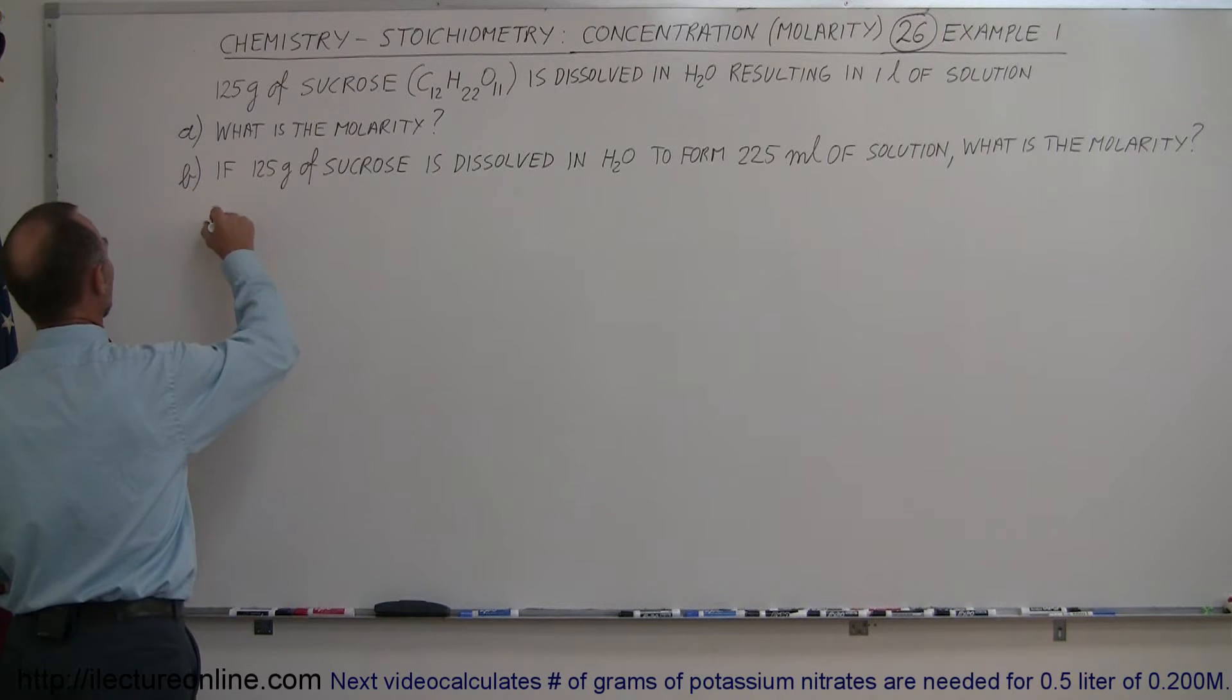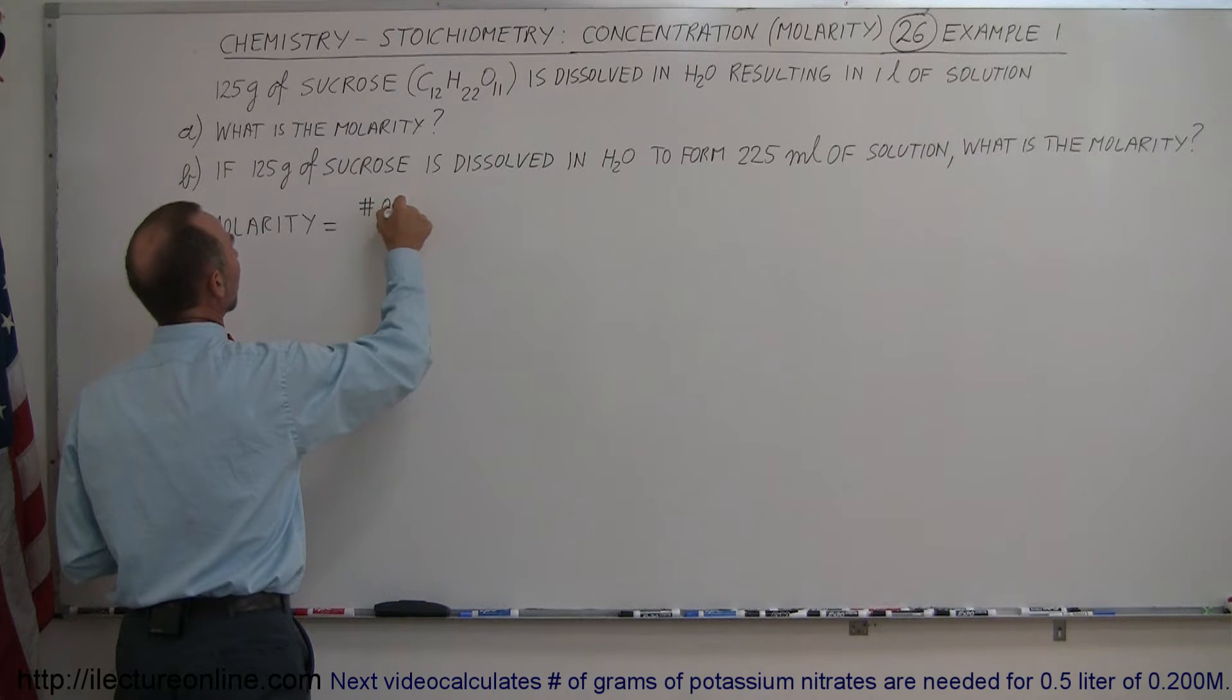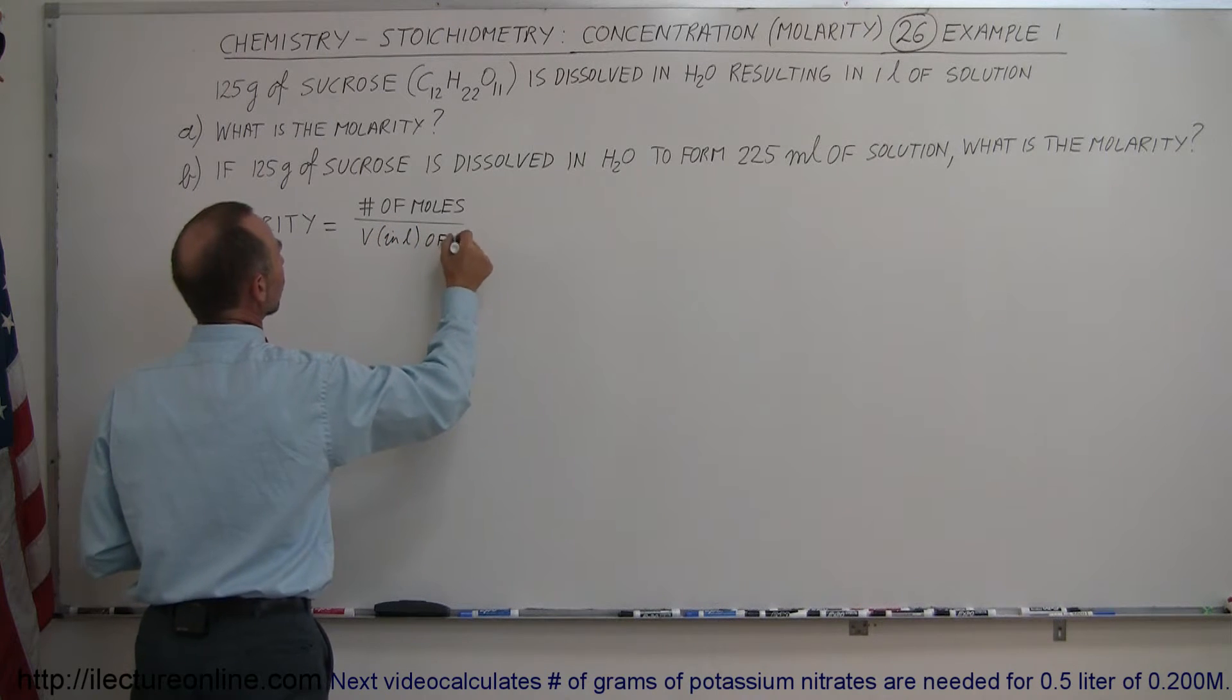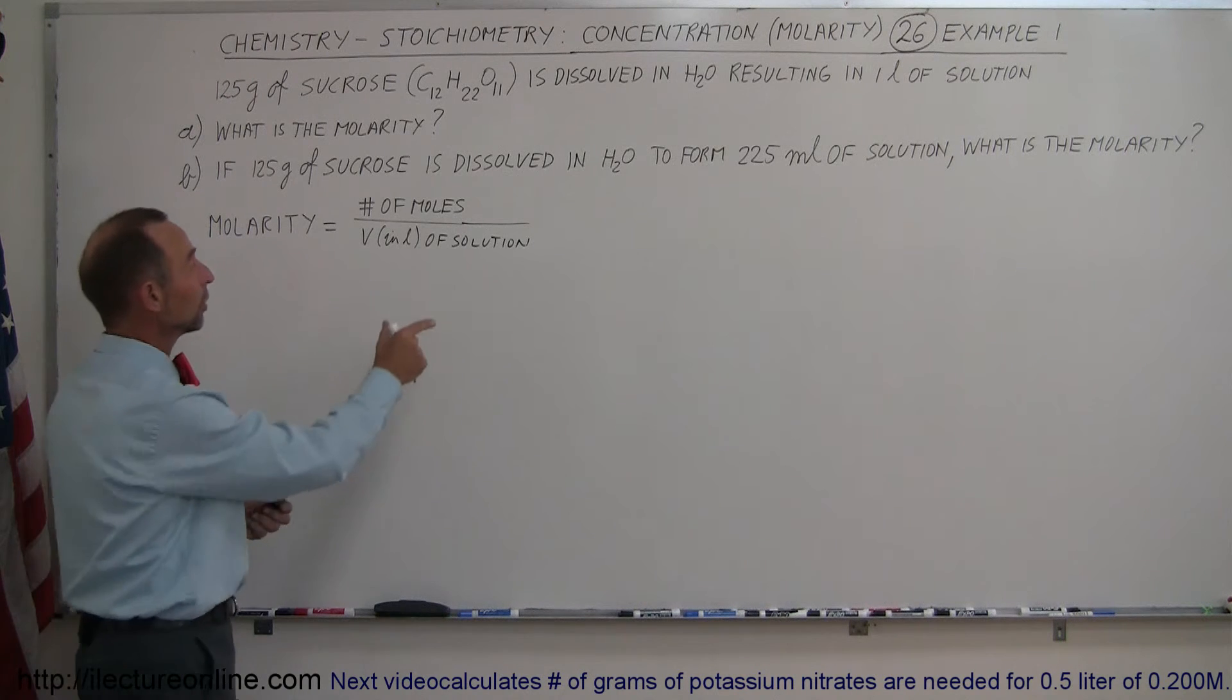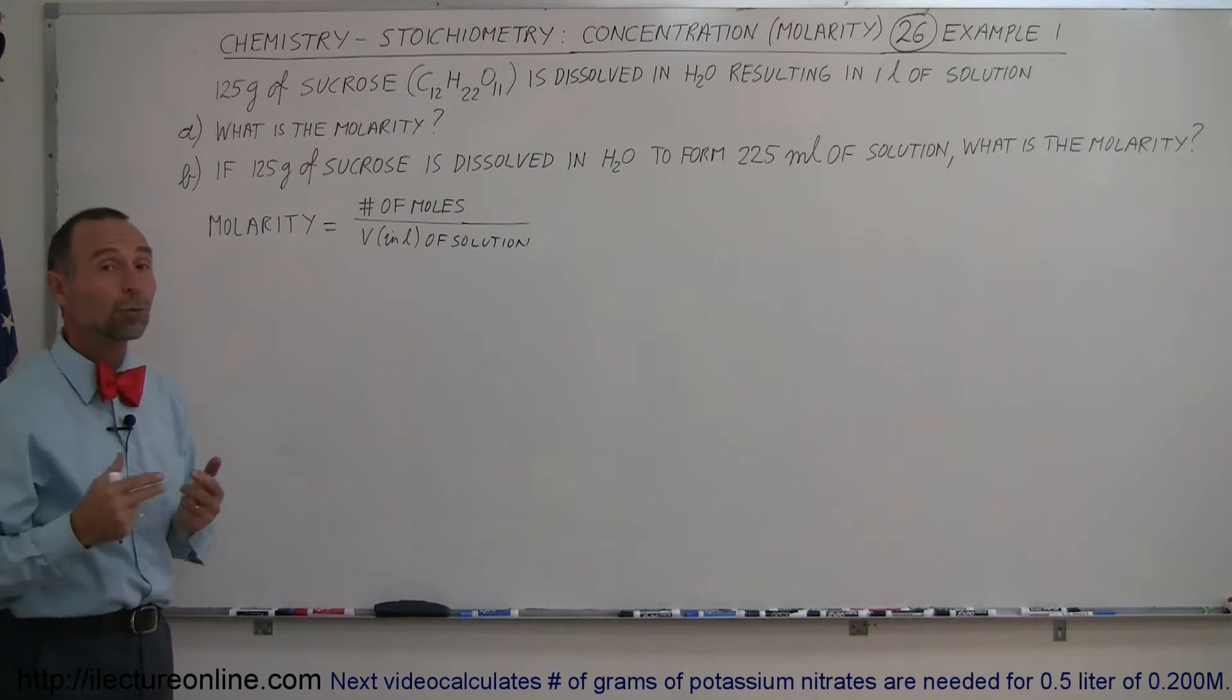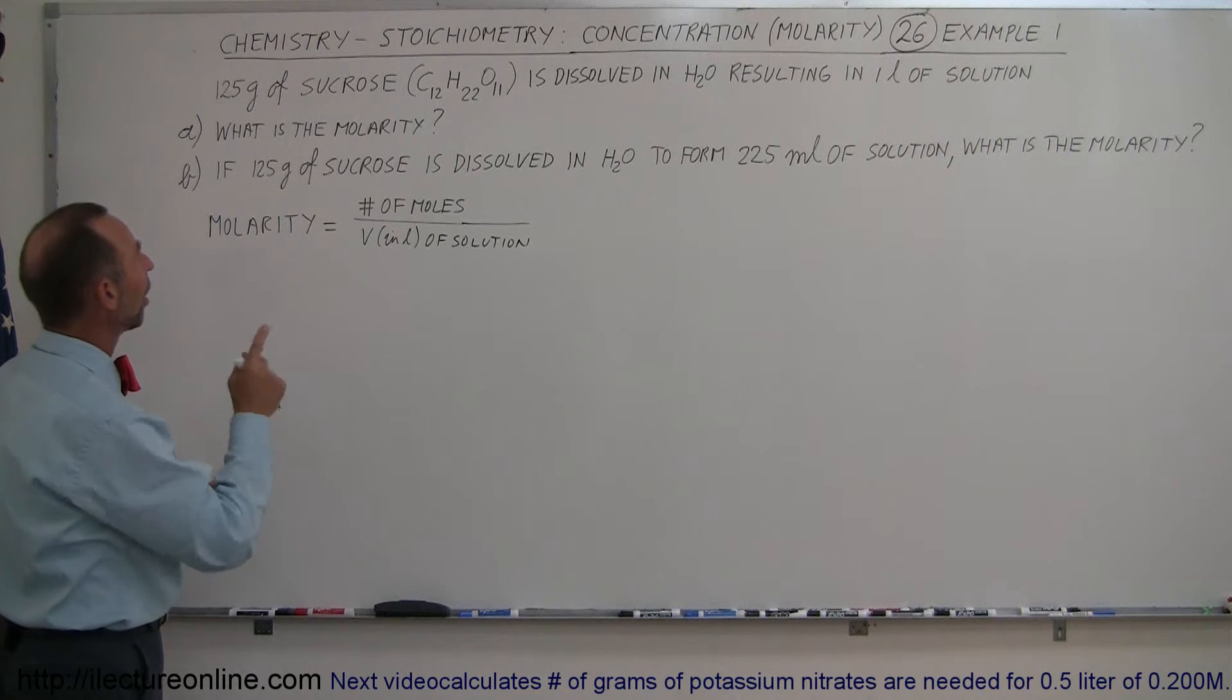And so remember, the molarity by definition, M, is equal to the ratio of the number of moles of the solute divided by volume in liters of the solution. So we know we're going to end up with 1 liter of the solution, so that will go in the denominator. But now we need to know the number of moles of sucrose that we have when we have 125 grams of that. So let's find the molar mass of sucrose.